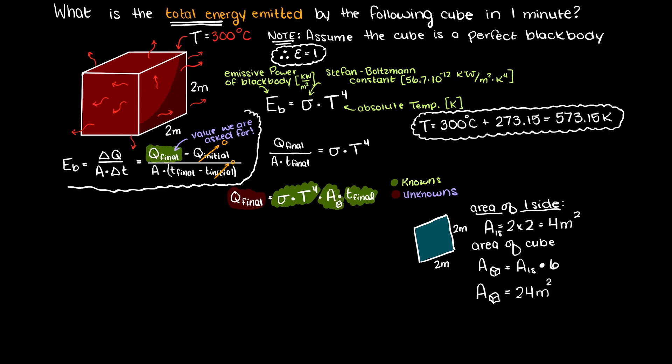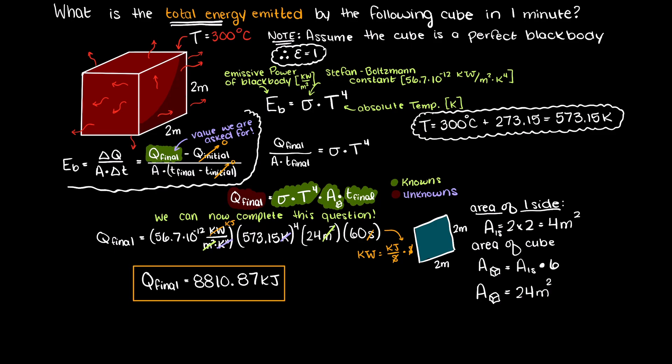We can now complete the calculation and validate that our units work out to energy. So, kilojoules, and there we go, this body will emit 8,810.87 kilojoules of energy every single minute.